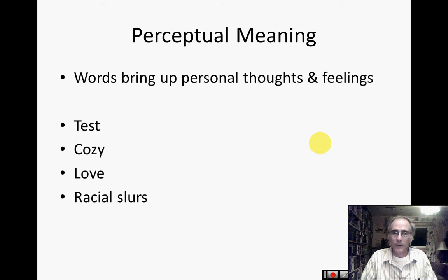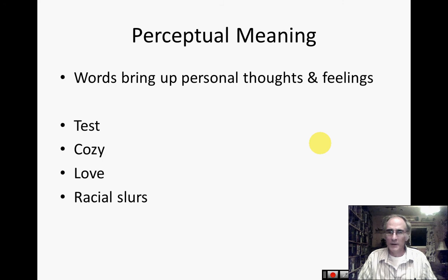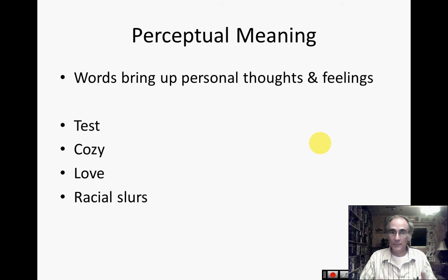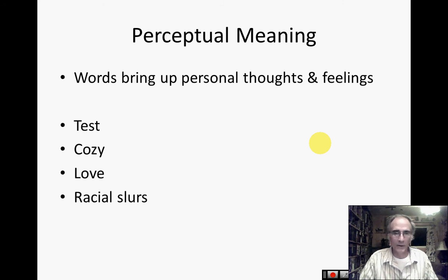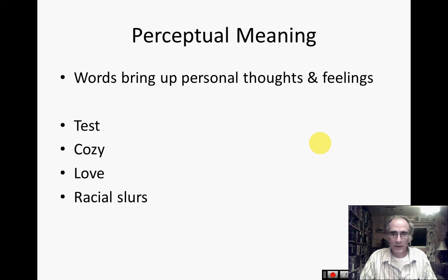The perceptual meaning brings in the thoughts and feelings behind words — all those emotions. We have many words in our language that bring up emotion. The word 'test' brings up certain emotions in people. The word 'cozy' — nice little pleasant emotions. The word 'love.' And every racial slur you've ever heard only has power because of that perceptual meaning behind it — the connotation, all of those emotions.